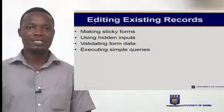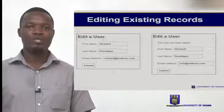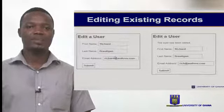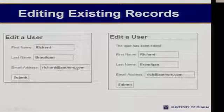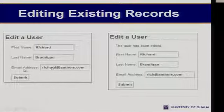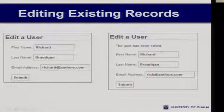The next thing we want to look at is editing existing records. Here we'll be making use of what we call sticky forms. We'll also be using hidden inputs, validating the form data, and executing simple queries. Sticky inputs are inputs that keep displaying data as and when forms are submitted. This is the edit form — you realize that it is pre-populated with data already. The first name of the user is Richard, there's a last name, and an email address. Upon submission of this form, if we edit the user detail, then we'd want to reprint the edited one so that we'll know what the previous values were and what the new values are.